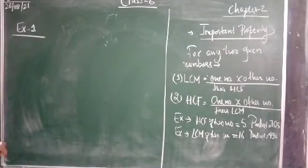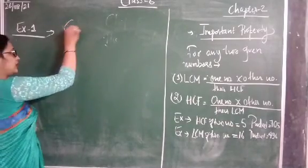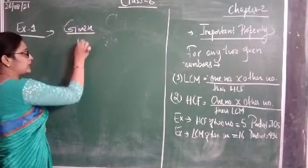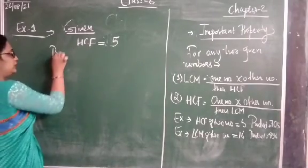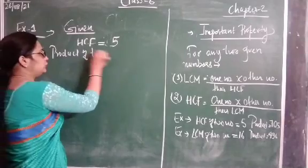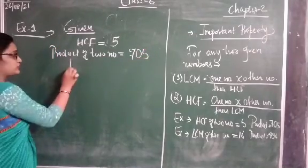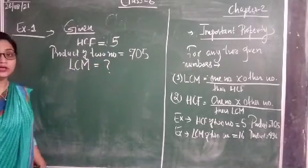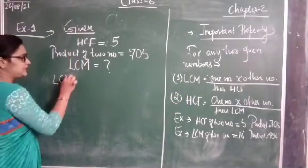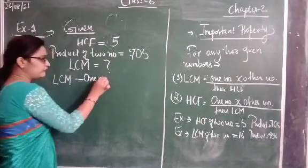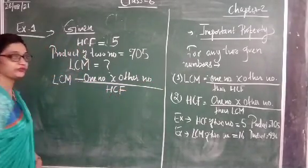So, example number one. First we will write the given things from the question. What is given in example number one? The HCF of two numbers is 5. And the product of the two numbers is 705. Our question is to find the LCM. Here we are going to use the first formula: LCM equals one number multiplied by the other number, divided by their HCF.